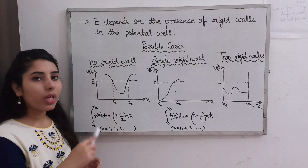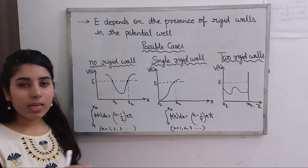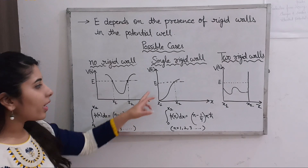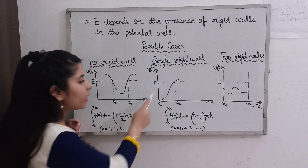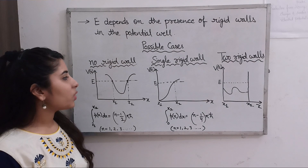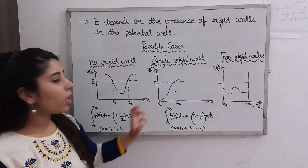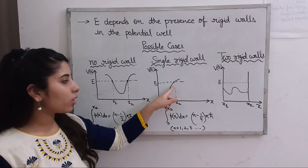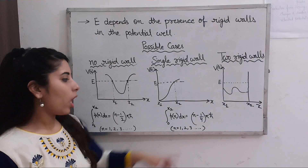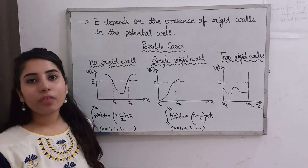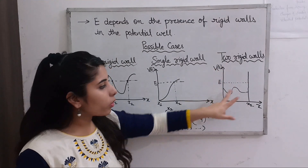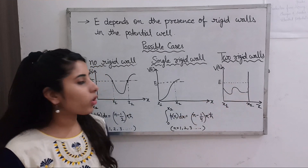For the single rigid wall case (one vertical wall at x = 0), the formula becomes: ∫₀^x₂ p(x)dx = (n − 1/4)πħ, with n = 1, 2, 3, ... to infinity. For the two rigid walls case, there is a corresponding separate formula as well.